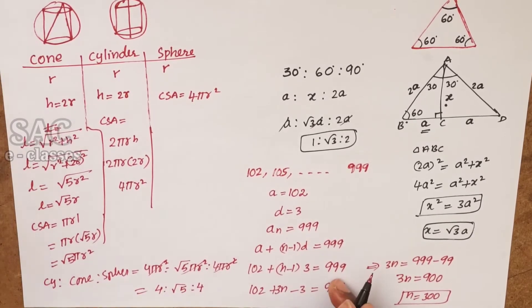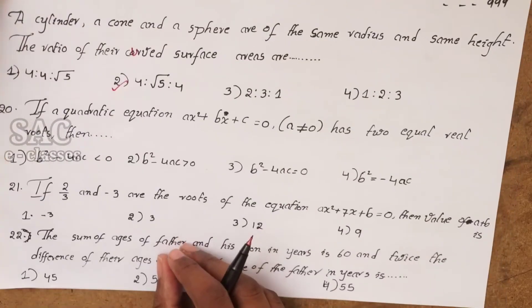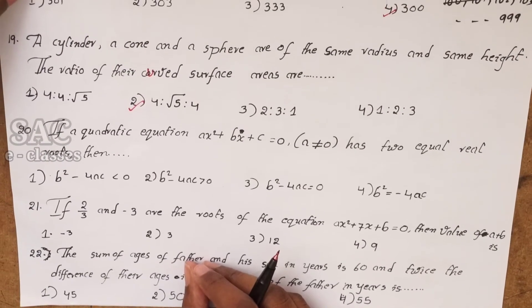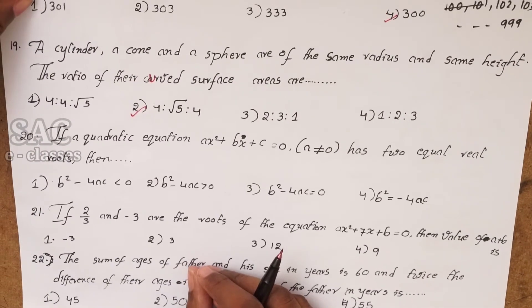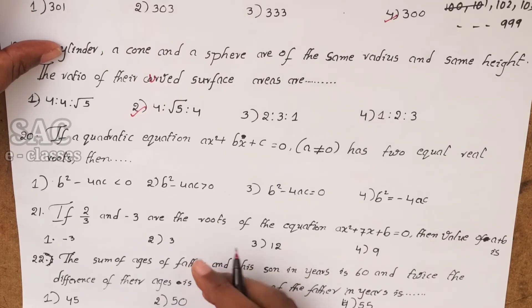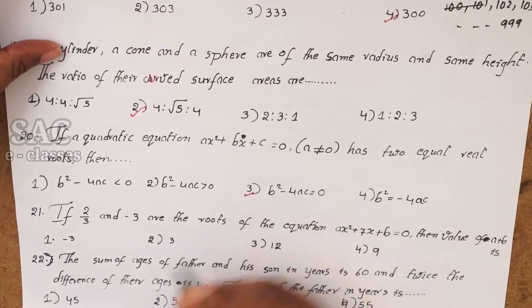Problem 20: if the quadratic equation ax² + bx + c = 0 has two real and equal roots, then obviously the discriminant is equal to 0.